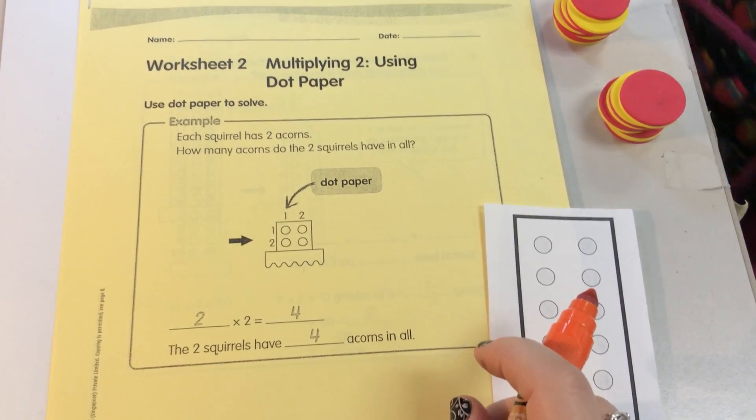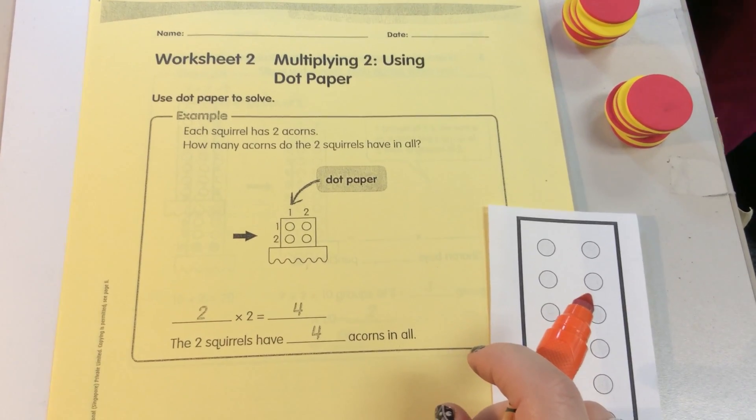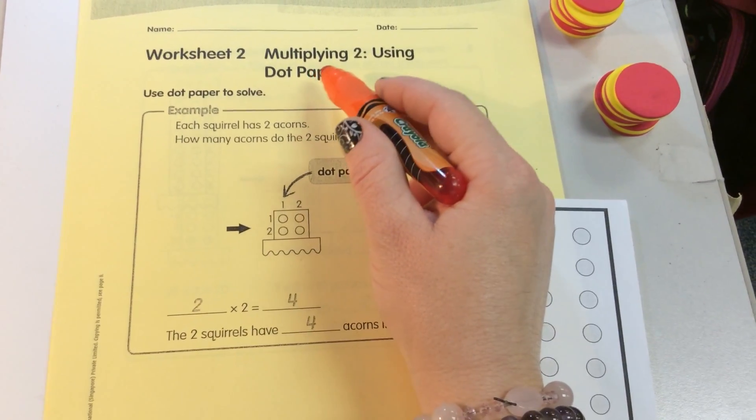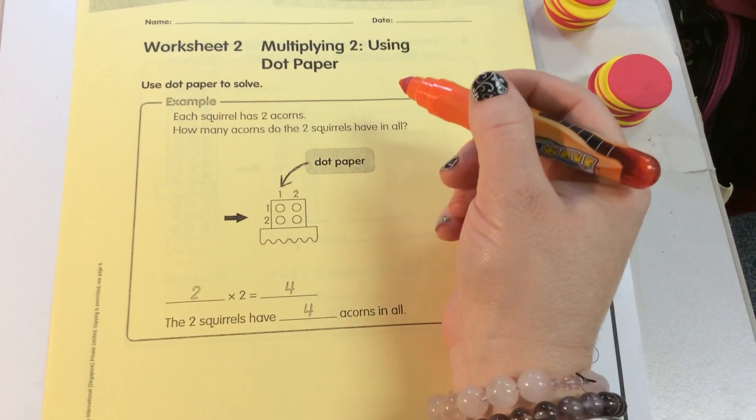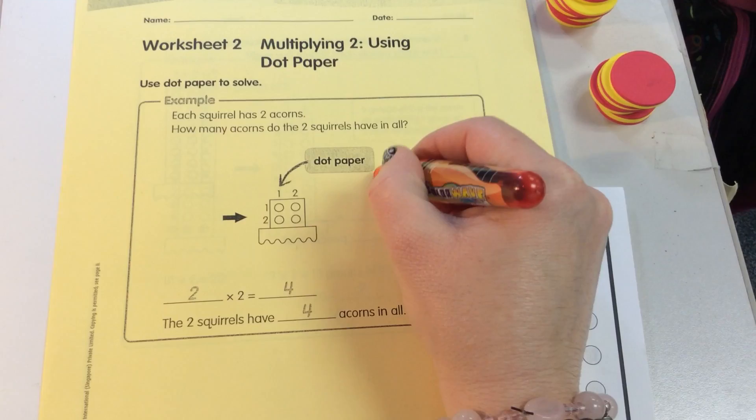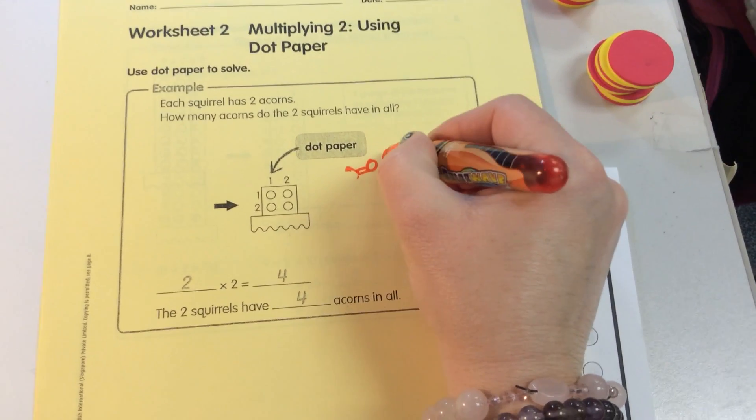Today we're going over chapter 6 and lesson 2 is about using dot paper to multiply by 2's. Now each squirrel has 2 acorns. So we have a squirrel and she has 2 acorns.